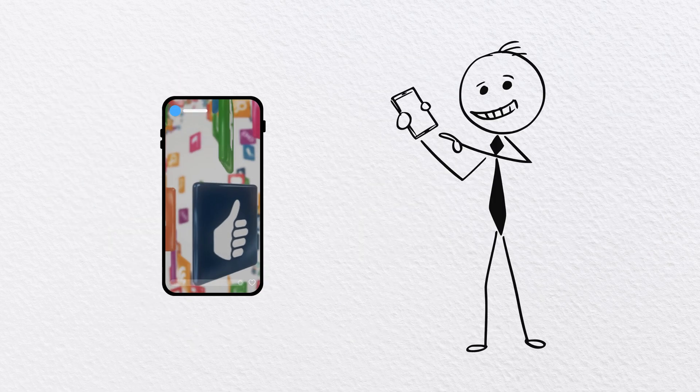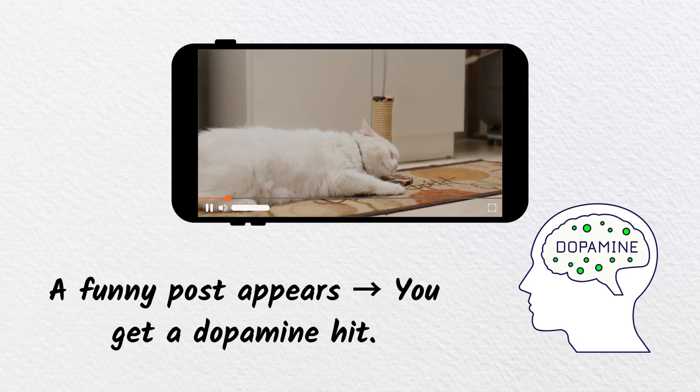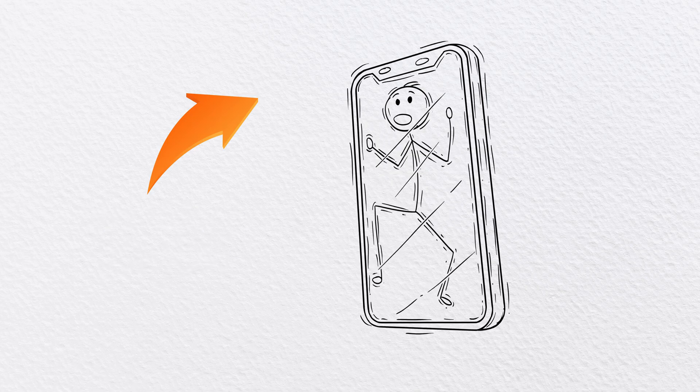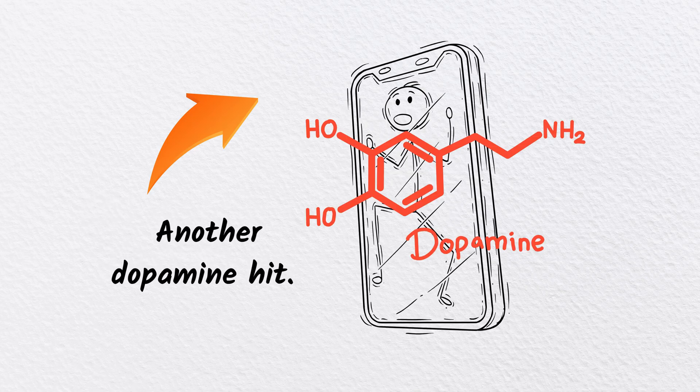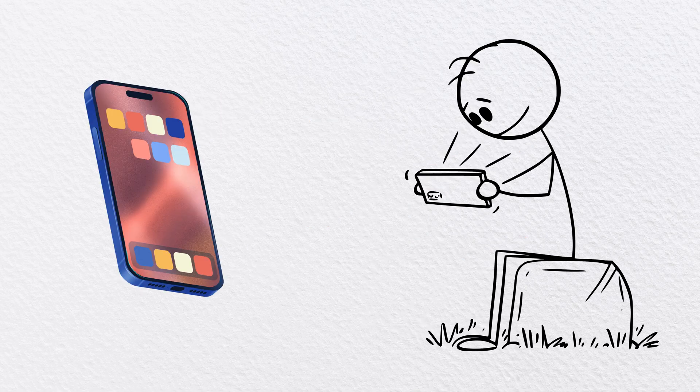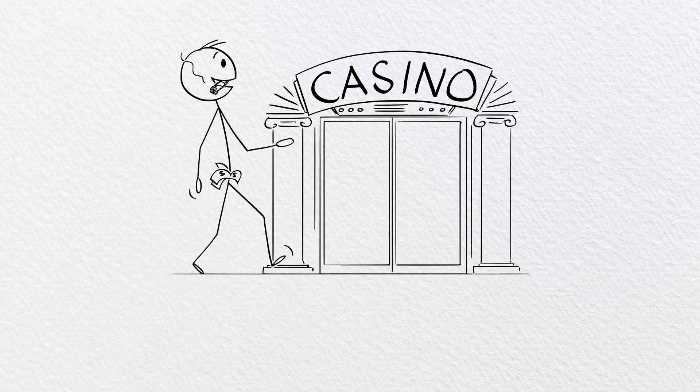Here's how it works: You scroll on social media, a funny post appears, you get a dopamine hit. You refresh your feed, new content appears, another dopamine hit. You open a new app, more stimulation, even more dopamine. It's the same system casinos use to keep gamblers hooked, except now it's in your pocket.